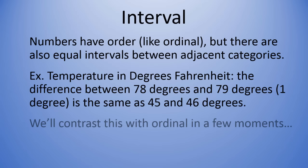So if we take temperature in degrees Fahrenheit, the difference between 78 degrees and 79 degrees, or that one degree difference, is the same as the difference between 45 degrees and 46 degrees. One degree difference once again. So anywhere along that scale up and down the Fahrenheit scale, that one degree difference means the same thing all up and down that scale. Okay so if we take 8 degrees versus 9 degrees, the difference there is one degree once again. That's a classic interval scale right there where those differences are meaningful. And we'll contrast this with ordinal in just a few moments.